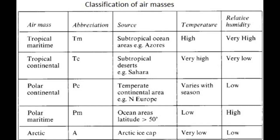The source of tropical maritime is the subtropical ocean areas — for instance, the Azores. For tropical continental, the source is the subtropical deserts — for instance, the Sahara.